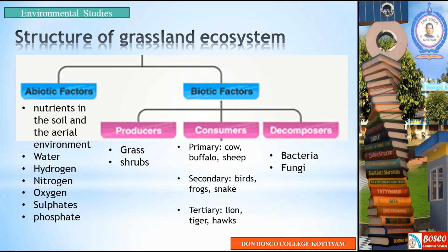Biotic factors are divided into three: Producers, Consumers, and Decomposers. Producers are grass and shrubs. Primary consumers are cow, buffalo, and sheep. Secondary consumers are birds, frogs, and snakes. Tertiary consumers are lion, tiger, and hawk. Decomposers are bacteria and fungi.